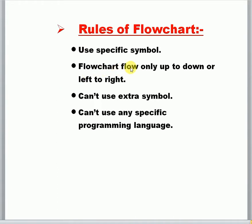Next rule: flowchart flow only goes top to bottom or left to right. You can write a flowchart only going top-down or left-to-right, but not bottom-up or right-to-left — that is wrong. You cannot use extra symbols. Also, very importantly, you cannot use any specific programming language inside a flowchart. You have to write only simple language with very short text and critically specific symbols.